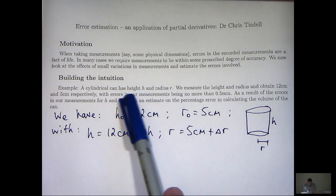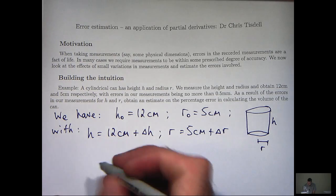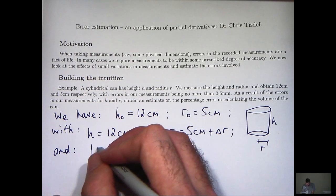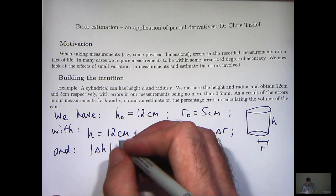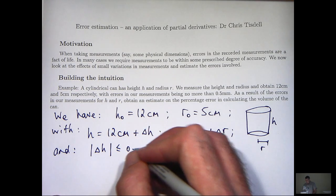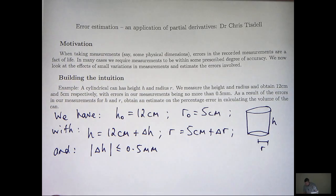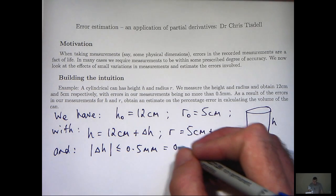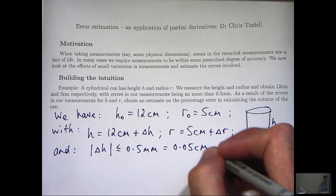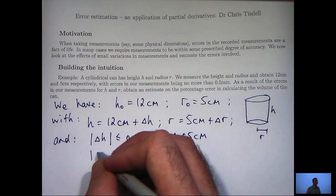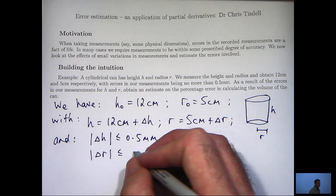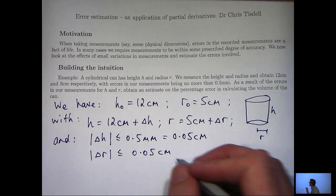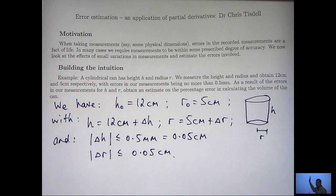All we know is that the errors in our measurements are no more than half a millimeter. So all we can say is that we have the following estimates on the error for our measurement of the height. Let's just convert that all to the same set of units. And similarly, we have the following estimate for our measurement for the radius.